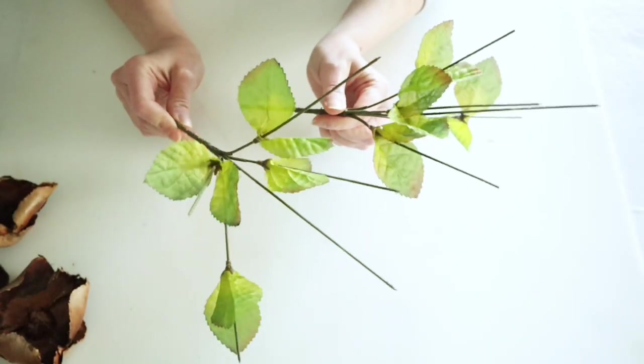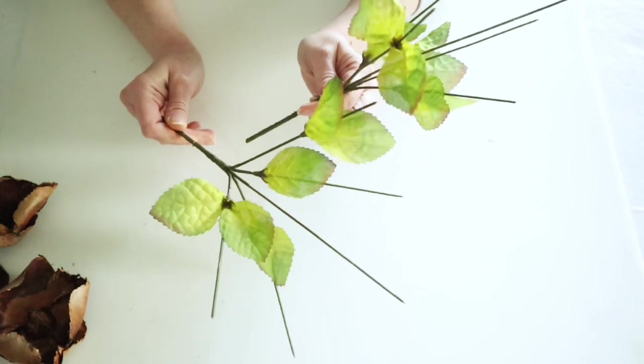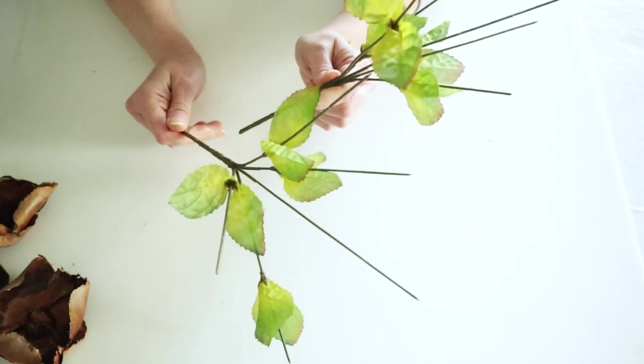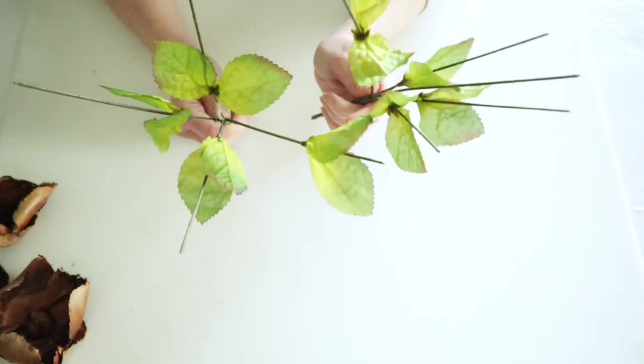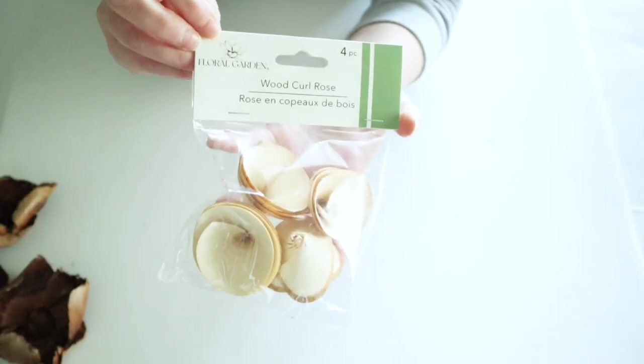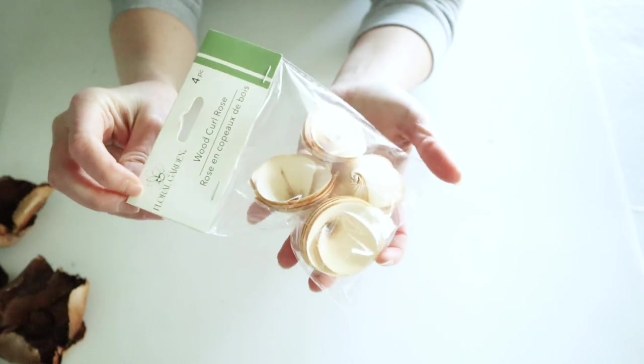If you've heard of the wood flowers from Trader Joe's, you know they're all the rage right now. But you can easily make these from Dollar Tree materials. I have a few stem picks here that I've already used the flowers on.